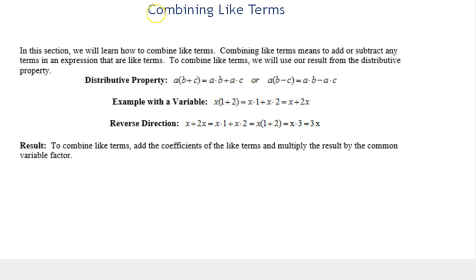In this video, we're going to learn how to combine like terms. Combining like terms means to add or subtract any terms in an expression that are like terms. All of this information is in your packet. We're going to use the distributive property — specifically the reverse direction — to combine like terms.